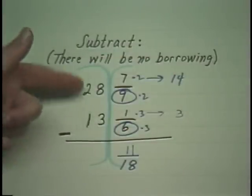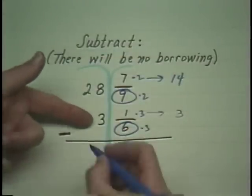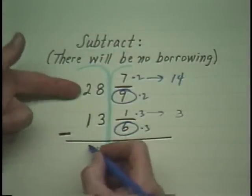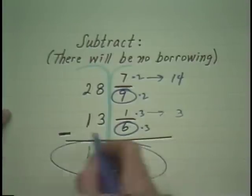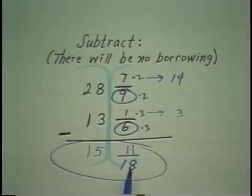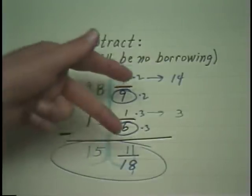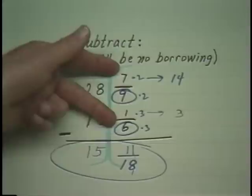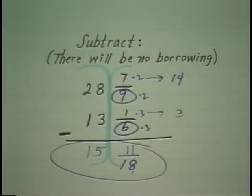This one from this one, which gives me 11 eighteenths. Then subtract the whole numbers which gives me 5. And of course always checking to see if this is reducible. Essentially that's what we did with addition except that we added instead of subtracted.